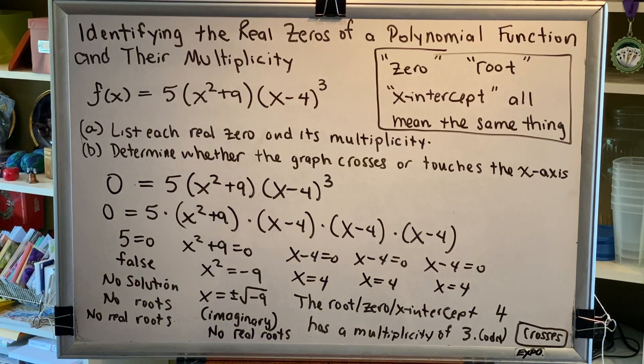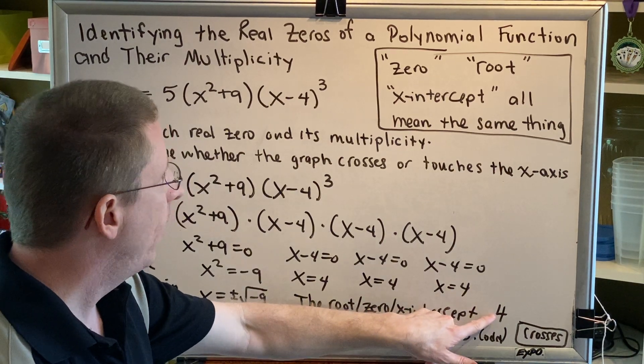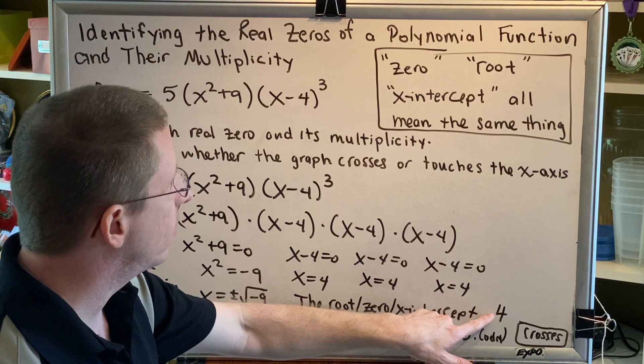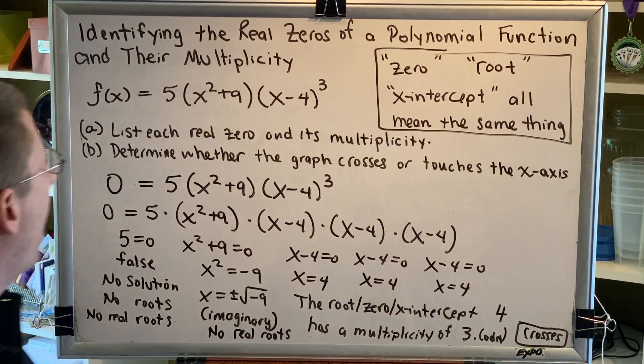So if we were to look at the graph of our function f of x, we would note that it has an x-intercept at 4, and that the graph crosses the x-axis at that location.